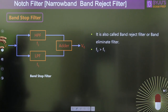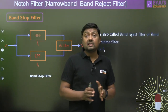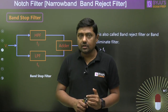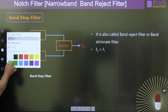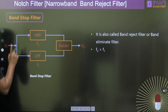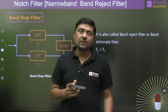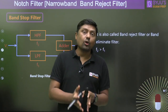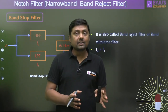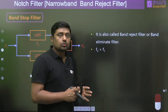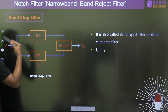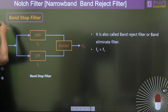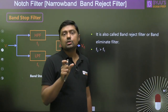What is the notch filter? The notch filter is a narrow band band reject filter, also known as band stop filter or band elimination filter. To design a band stop filter, we connect a high pass filter and a low pass filter in parallel, and then add an adder at the output. That circuit will behave like a band stop filter.